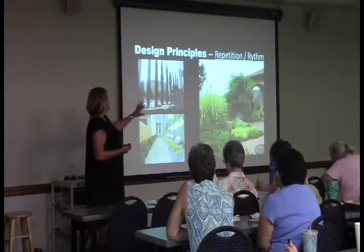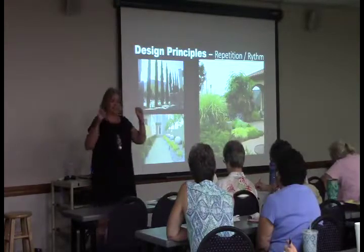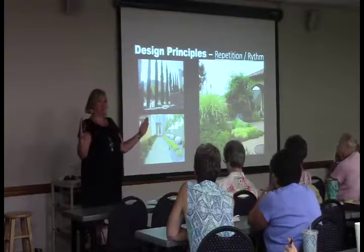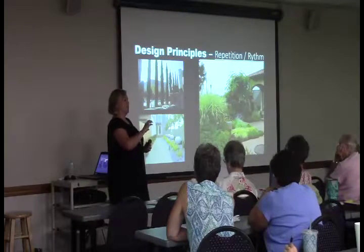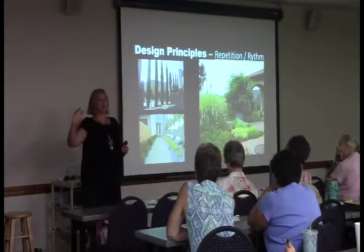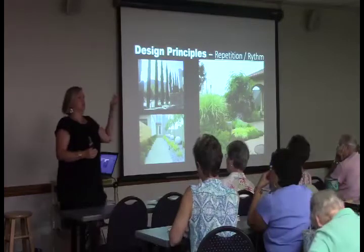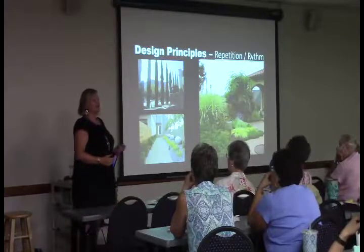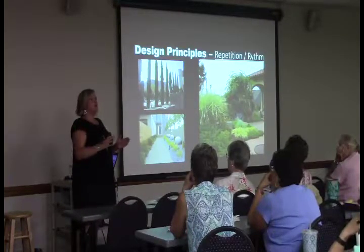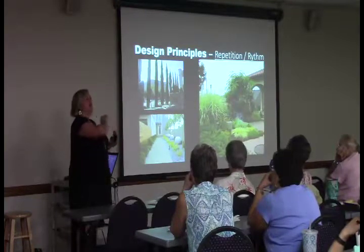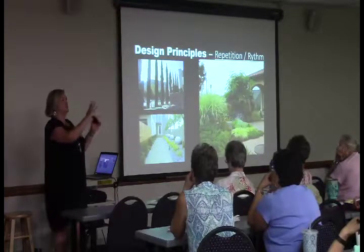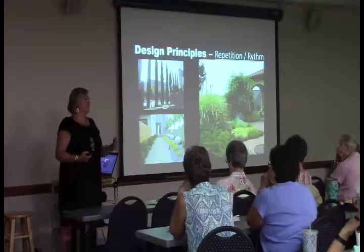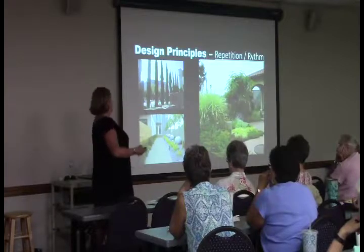A common mistake especially in the front yard is when someone plants one of these, one of those, one of these, one of those — it's creating a rhythm, but typically in a residential landscape that's not what we're looking for. We're looking for harmony — ease when looking at the landscape so our eyes can just move through very easily. Have we all seen that — the one of these, one of those — where you're just kind of like, okay?